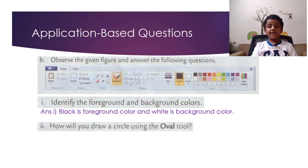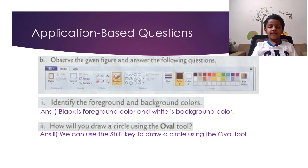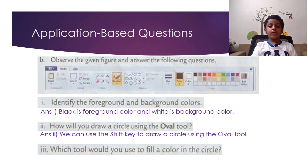Question 2. How will you draw a circle using the oval tool? So the answer is you can use the Shift key to draw a circle using the oval tool. Question 3. Which tool would you use to fill a color in the circle? So the answer is Fill with color tool.